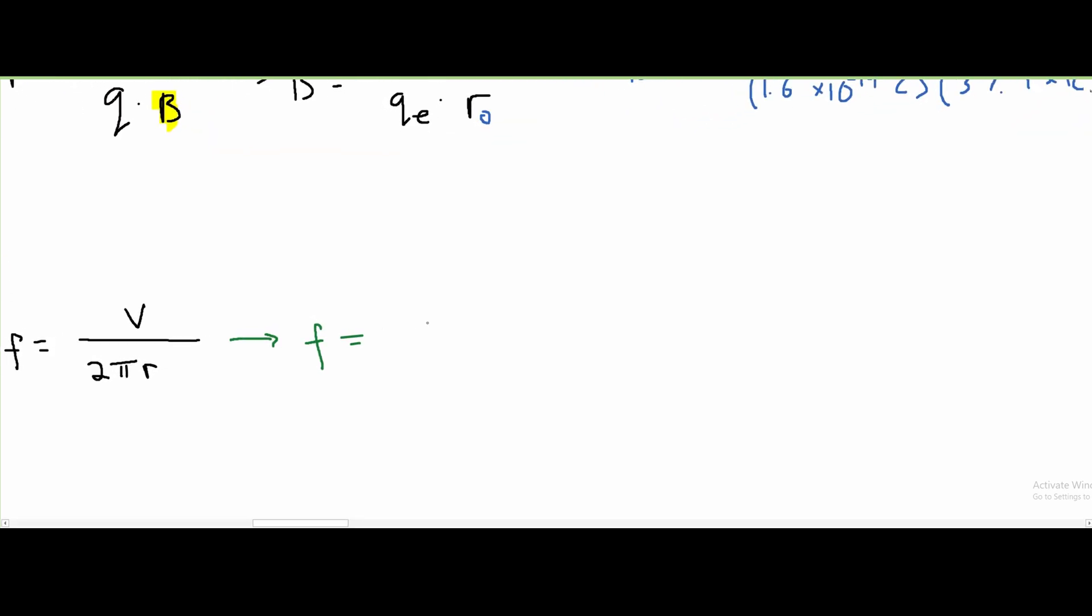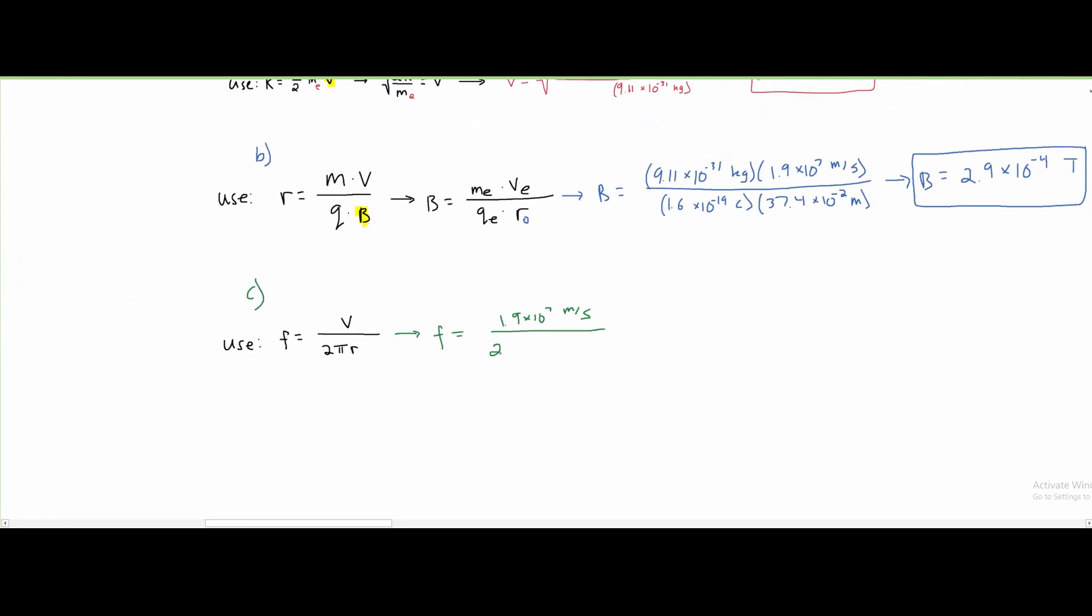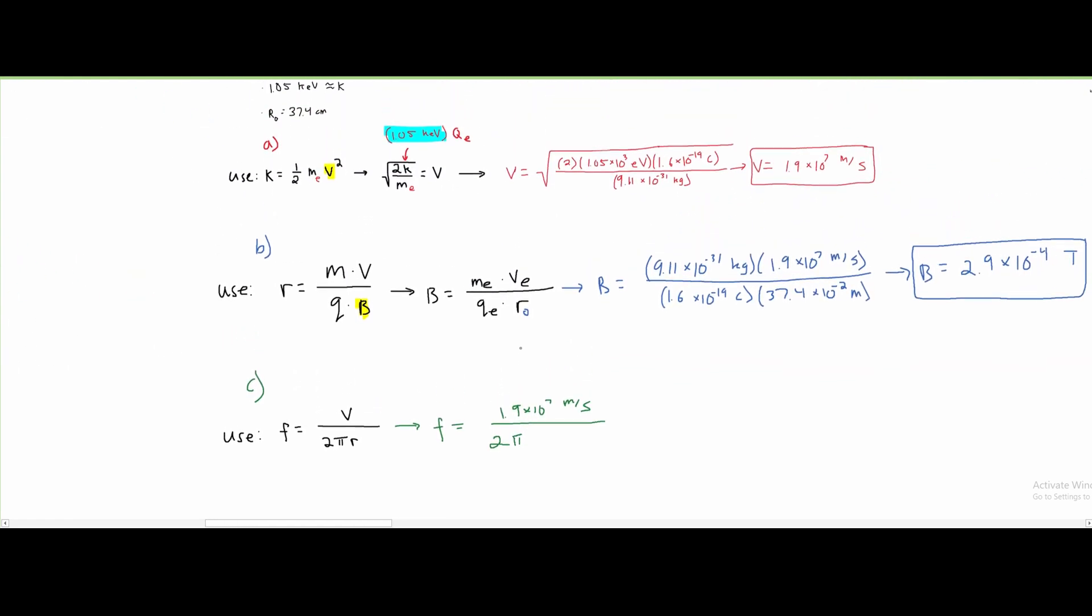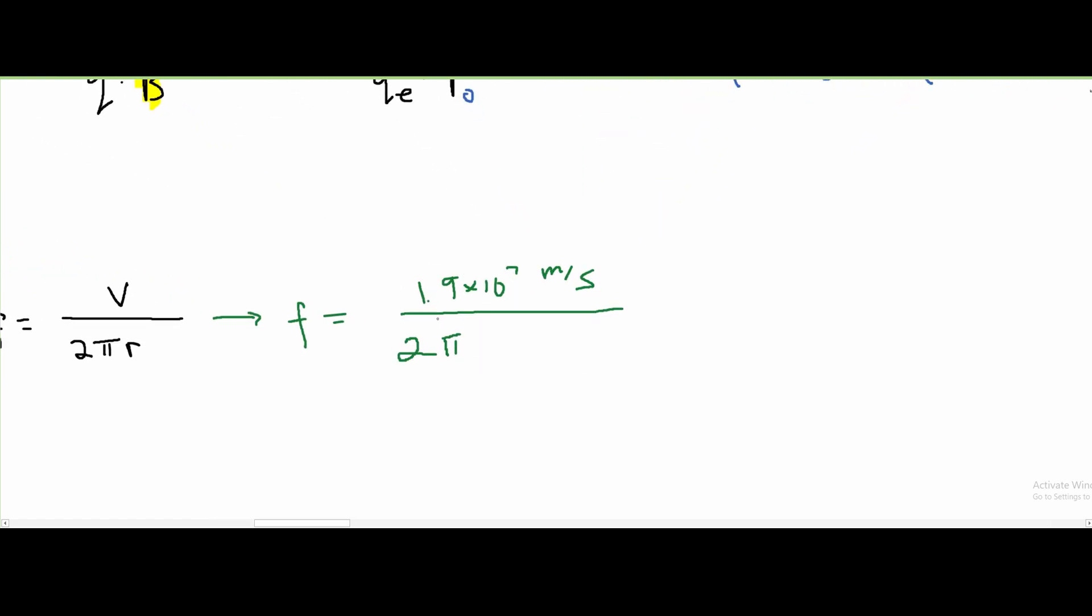So we can just go about plugging in all of our values here. So we can say that our f equals v, which is 1.9 times 10⁷ meters per second. We have our 2π and our radius, which is 37.4 centimeters, or 37.4 times 10⁻² meters. And this is going to give us approximately 8.1 times 10⁶ hertz. And this is our answer for part C.